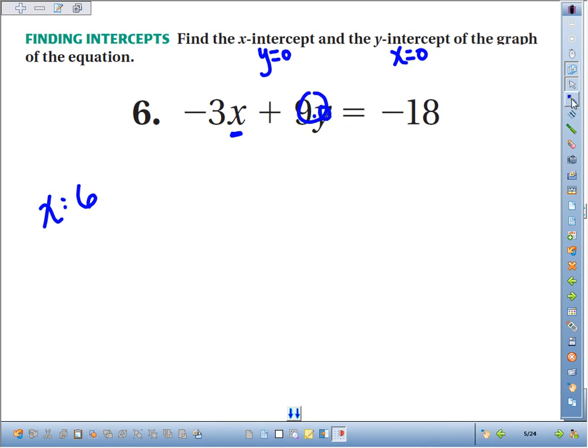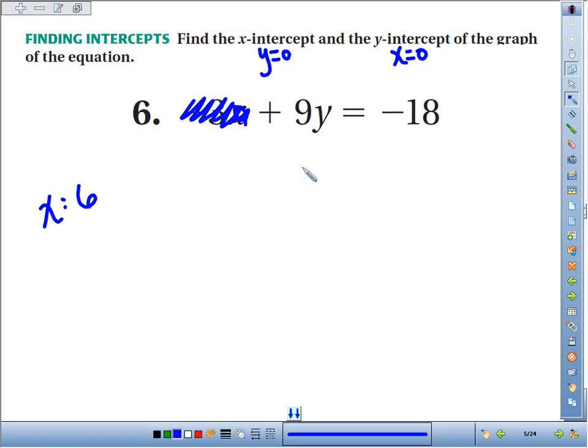If we were to find the y-intercept, the key there is making x 0. Well, negative 3 times 0, that disappears now, and we're left with the equation 9y equals negative 18. Dividing both sides by 9, we find that our y-intercept is negative 2.